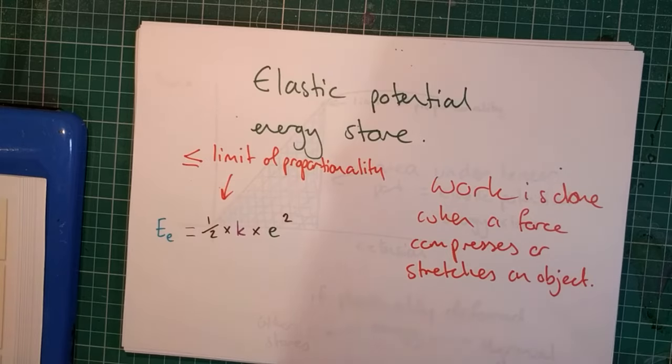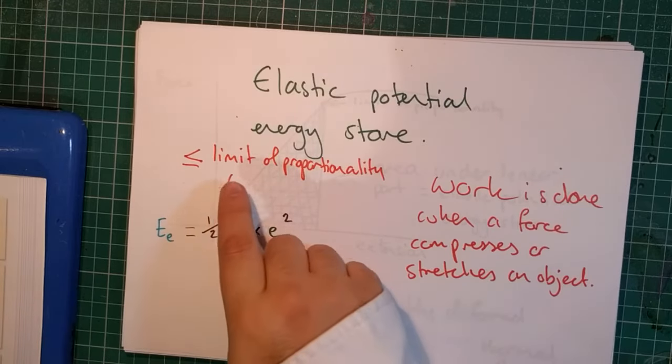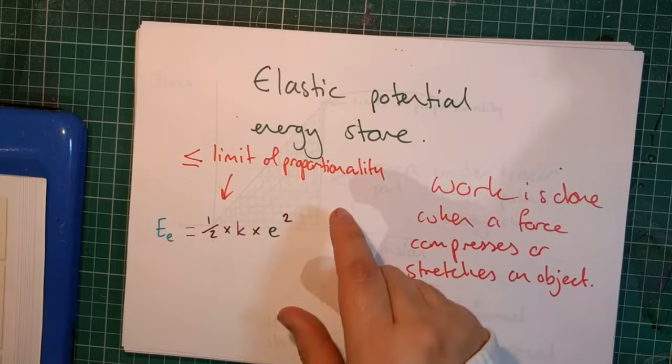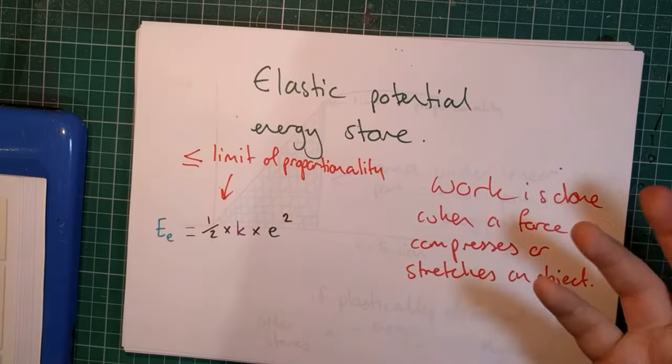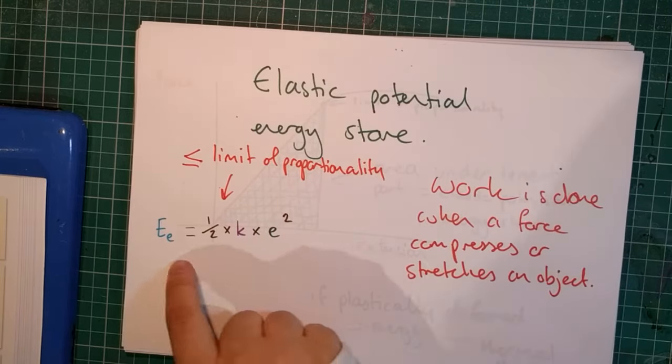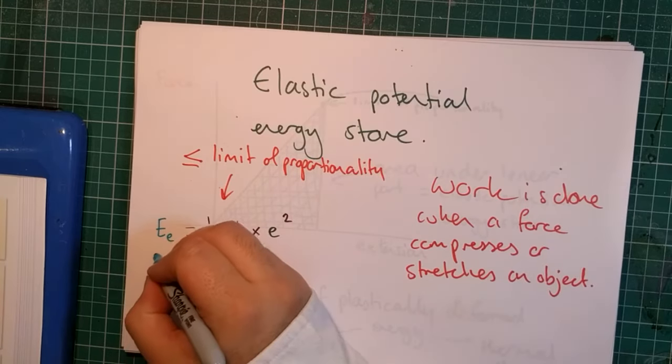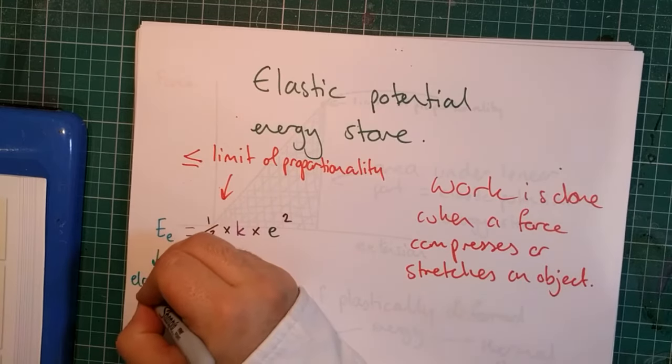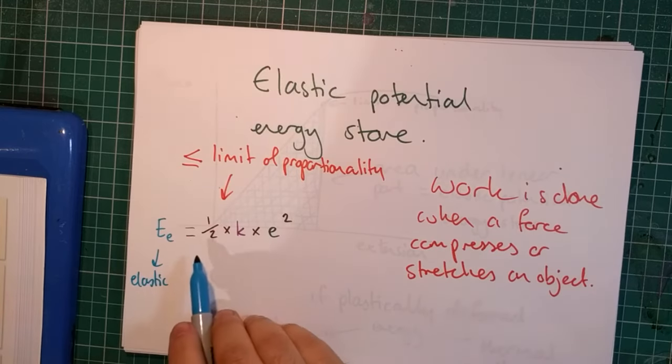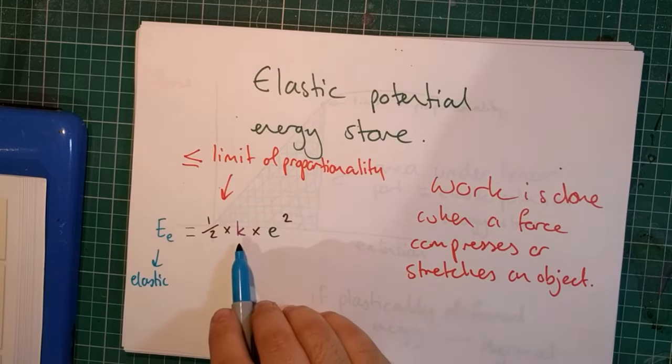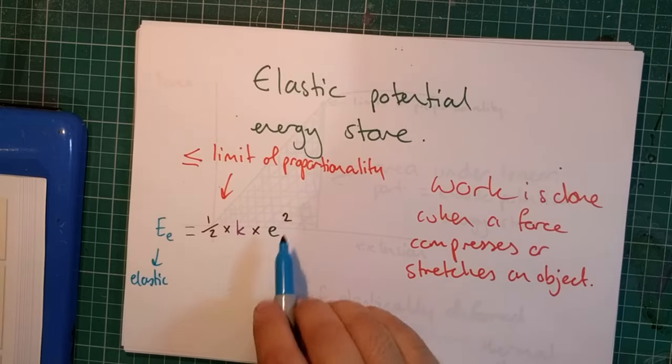As long as the force applied is below the limit of proportionality for a particular material or object, then this equation here is true. That equation states that the elastic potential energy is equal to half multiplied by the spring constant multiplied by the extension squared.